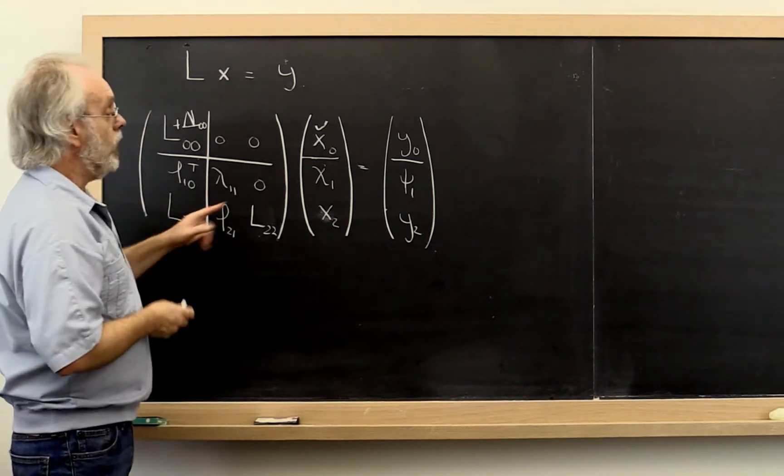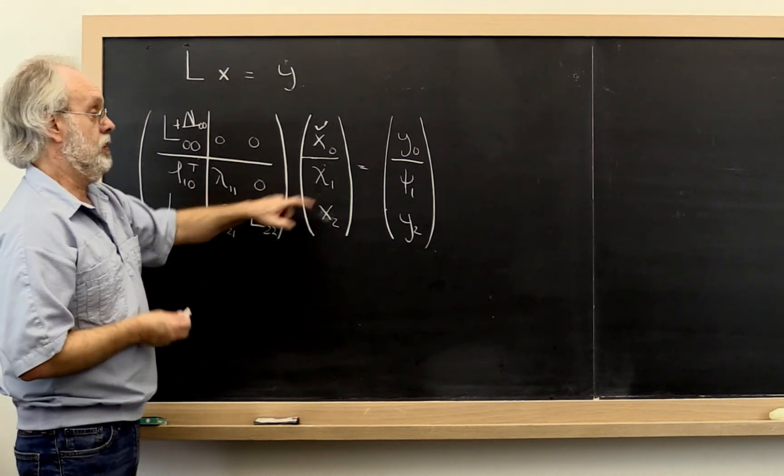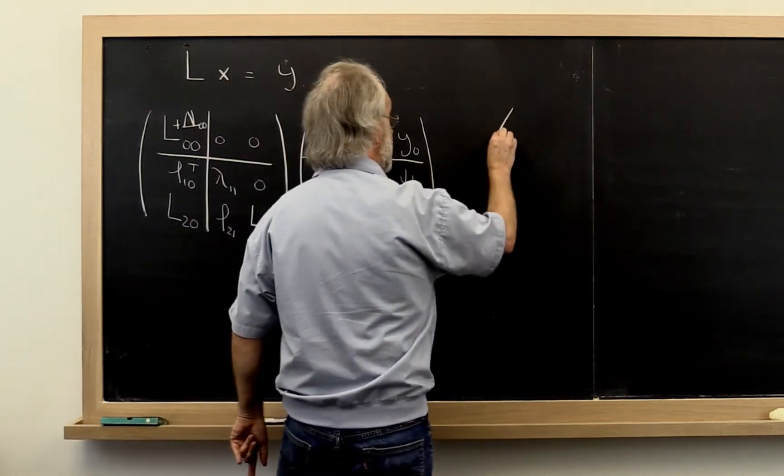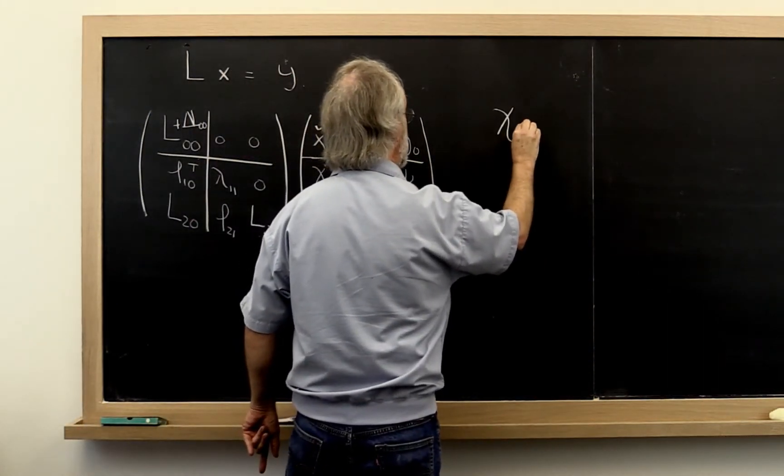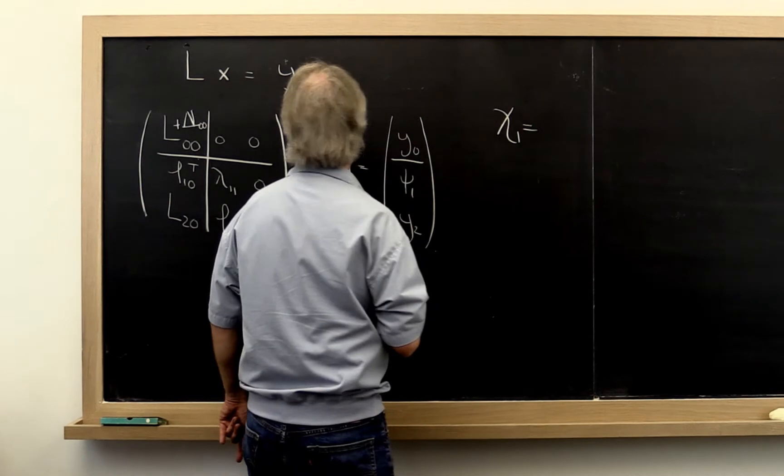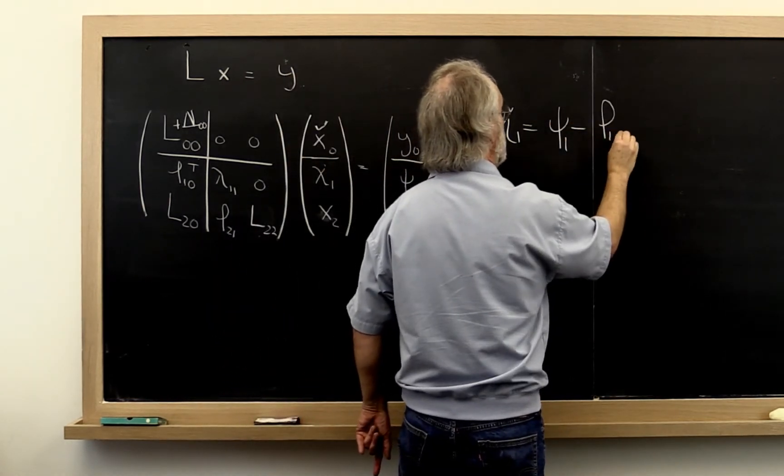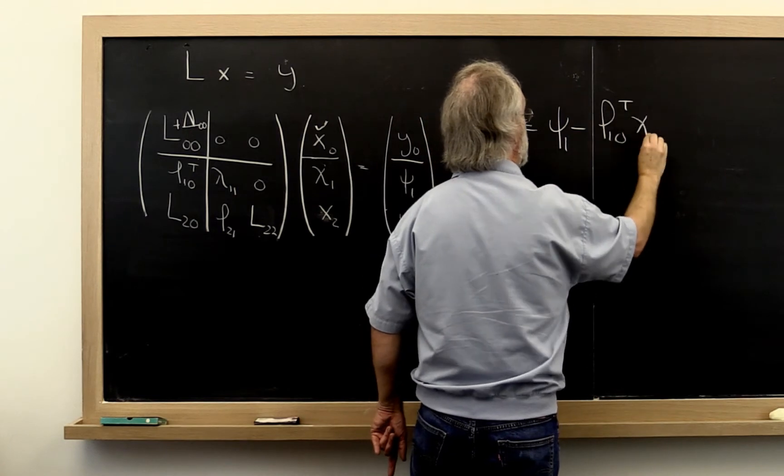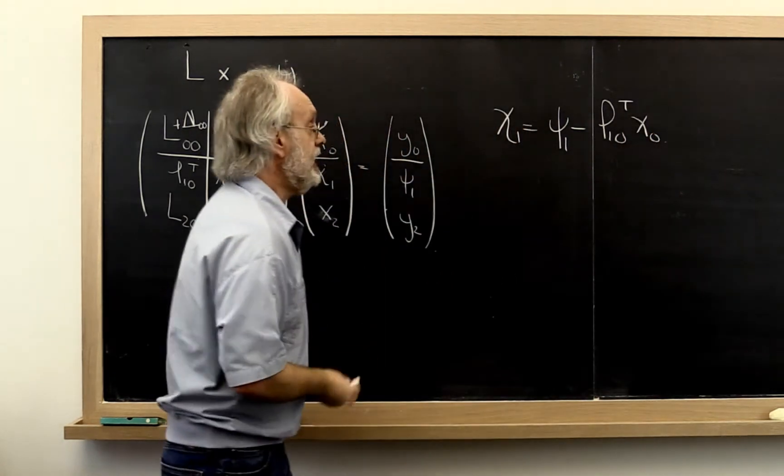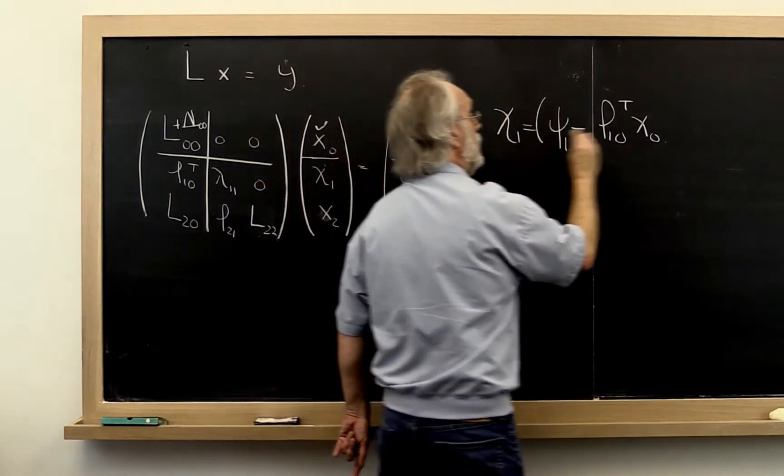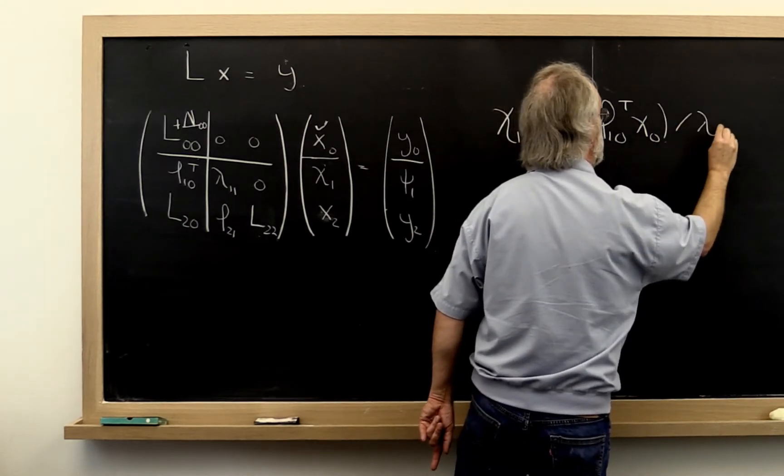Now what goes into computing chi1? Well, in exact arithmetic, chi1 would be computed as psi1 minus L10 transpose times x0. And then the result of that would be divided by lambda 1 1.